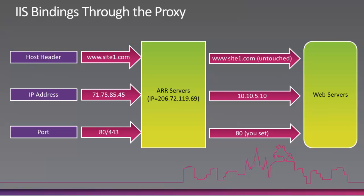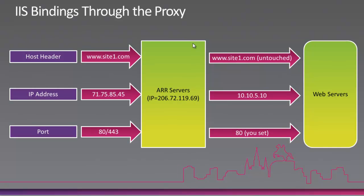There are three main bindings that come into play, shown in this diagram — actually from a talk I did in 2010 at TechEd. We have three main bindings: the host header, the IP address, and the port. As a request travels through ARR, let's say our host header is www.site1.com, we have an IP address, and the port is 80 or 443. The host header goes through untouched — it keeps www.site1.com all the way through to the web server.